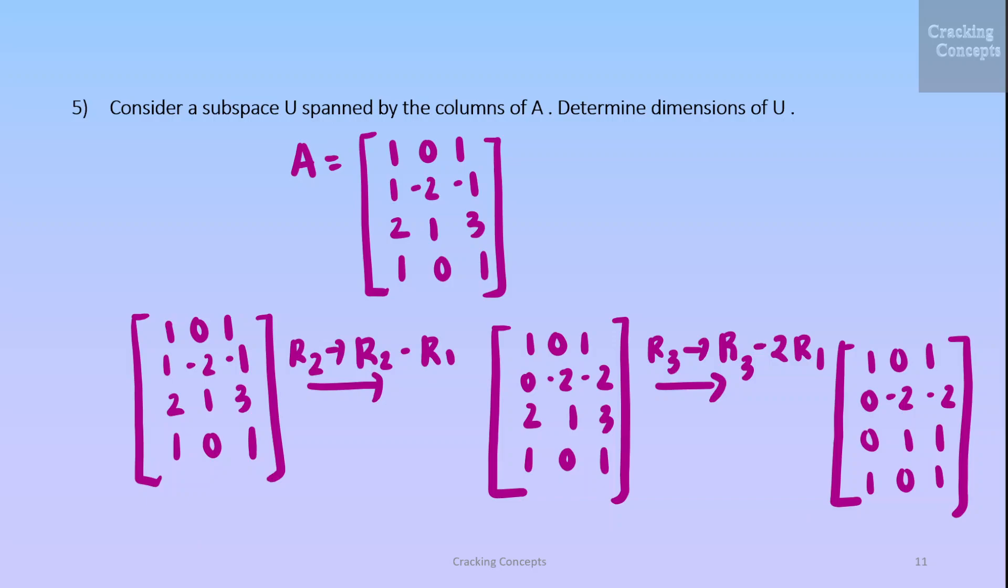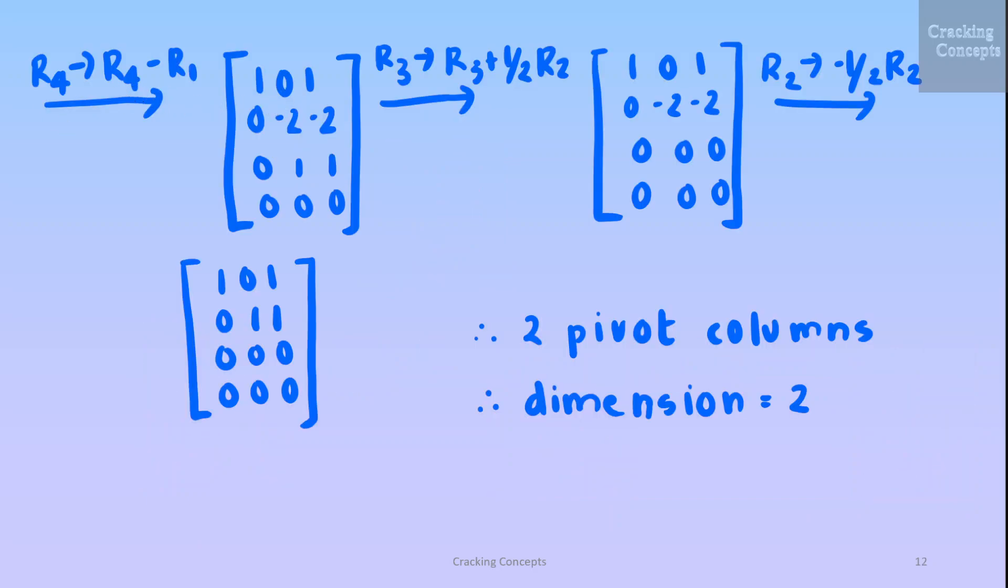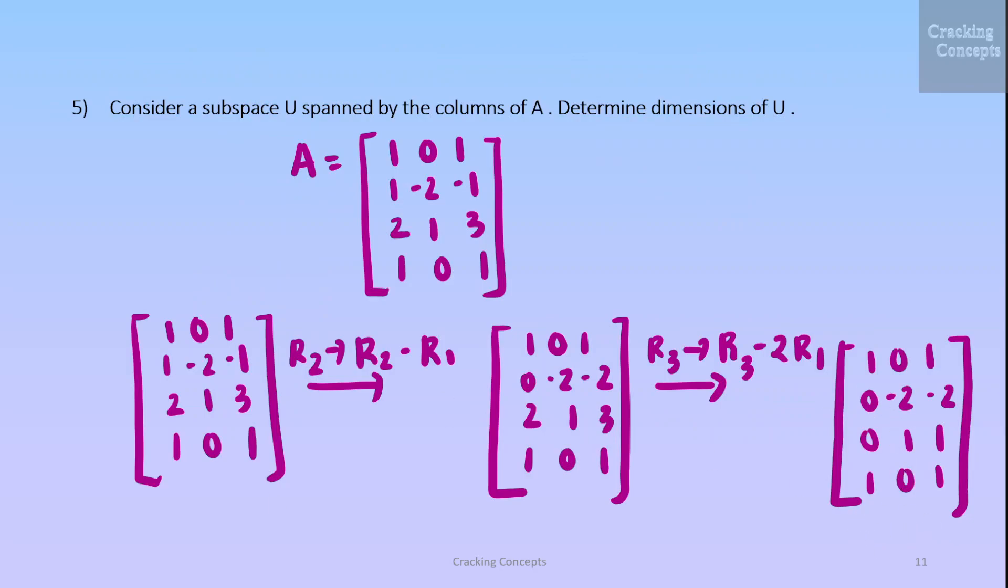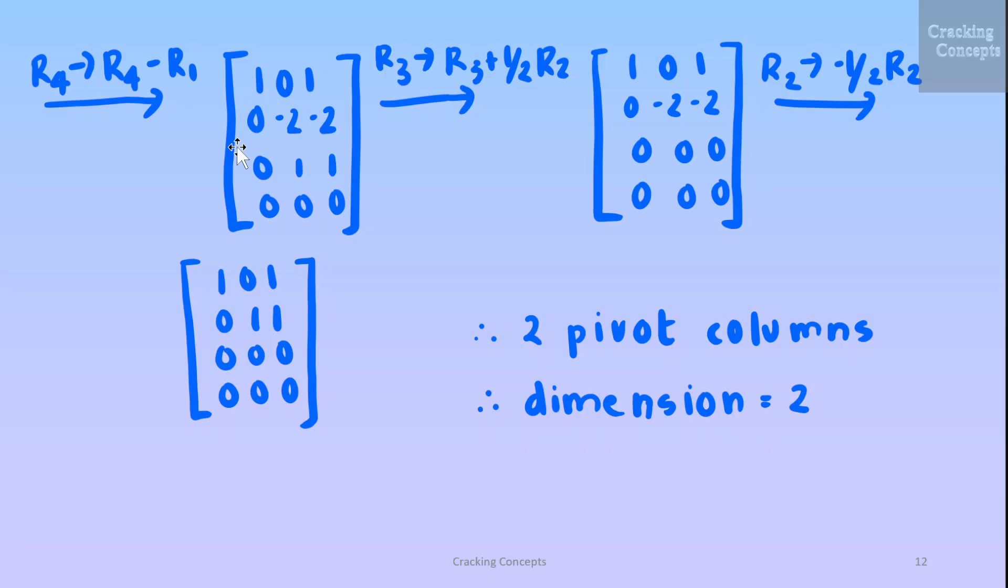So we will get this form. Then we add the third row to 1 by 2 of the second row. So this will be 0. Then we'll divide the second row by minus 1 by 2. This will be the final matrix in its row echelon form. You can see that there are only two pivot columns. So when we go for a staircase structure, it is only obtained till the first two columns. Third column does not obey it. So these two will be the pivot columns. Since the number of pivot columns is 2, the dimension will be 2.